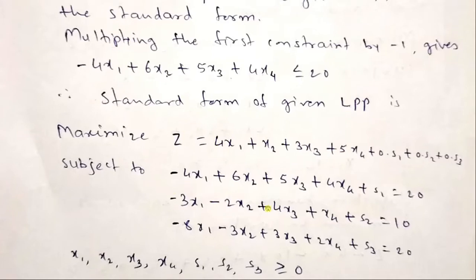Standard form of this LPP is maximize z equal to 4x1 plus x2 plus 3x3 plus 5x4 subject to all three constraints which are less than equal to type. We will add the slack variables s1, s2, s3 and inequality becomes equations. This is the standard form of this LPP.